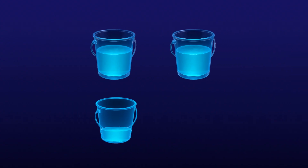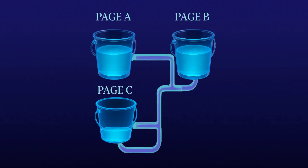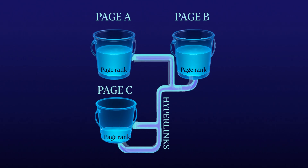Imagine each webpage as a bucket and hyperlinks as pipes connecting those buckets. Every page holds a certain amount of PageRank — like water — and every link it gives out is a pipe through which it shares some of that value. The more links a page has, the thinner its pipes, meaning less water flows through each one. But if important pages link to you, you get more water, more weight, more trust — and in the eyes of a search engine, that makes your page important.